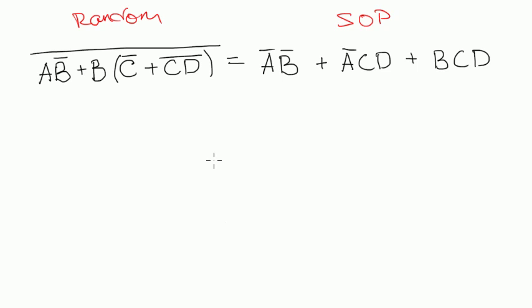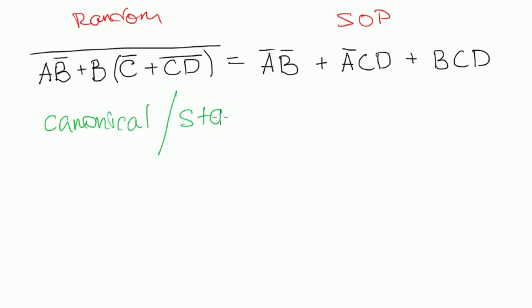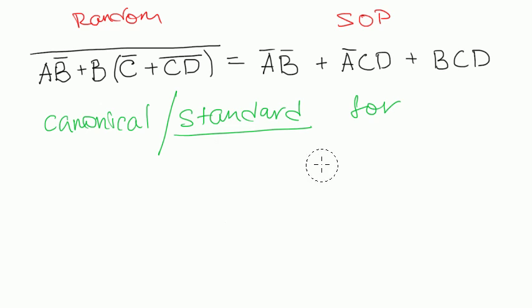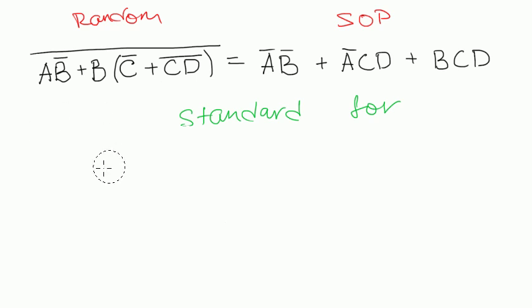Another representation is called canonical or standard form. I prefer the term standard form because it makes more sense, but canonical form is exactly the same thing. So we'll just call it standard form. The standard form can be a sum of products form, so let's start with the standard sum of products form.